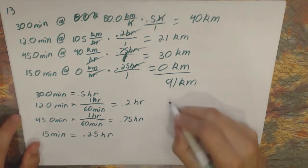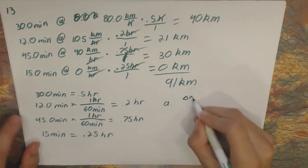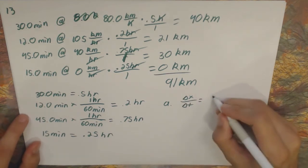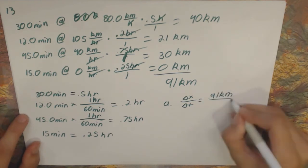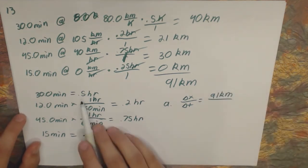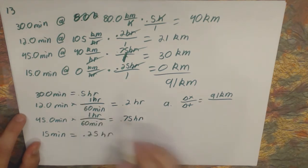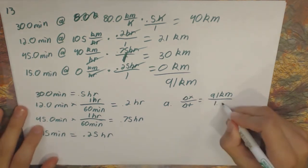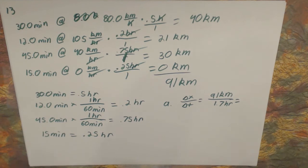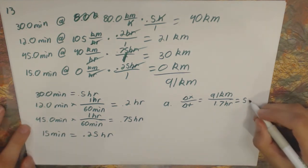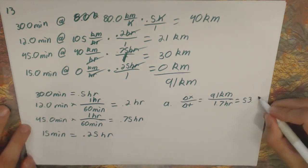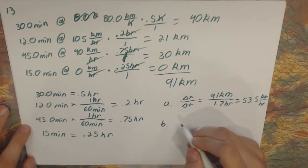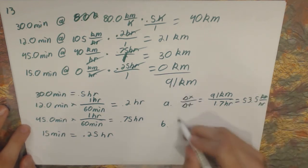To find the average speed for the trip, take total distance over total time. Total distance is 91 kilometers. Total time is 0.5 + 0.2 + 0.75 + 0.25 = 1.7 hours. Dividing gives 53.5 kilometers per hour. Part B asks for the total distance traveled, which we already found: 91 kilometers.